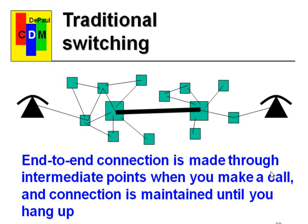We have computers. They're all connected to this switching mechanism which can interconnect a given computer to a distant computer by way of an address. Somewhere in between, a communication circuit has to be established between two computers that want to communicate. The way that circuit is established is the big difference between the traditional telephone switching system and the way that the internet works.